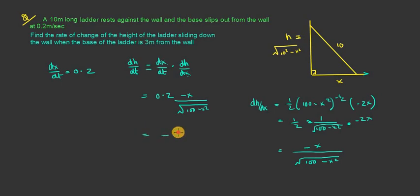And I want to find out when this is 3 metres from the wall. So that's going to give me minus 0.2 times, I can replace x with 3 over the square root of 100 minus 9. That's just a calculation. And that is my rate of change of the height of the ladder as it slides down. And it's a specific rate of change when the x is 3 metres from the wall.